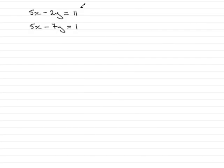Now in this example, what we've got to do is solve the simultaneous equations: 5x minus 2y equals 11, with 5x minus 7y equals 1.